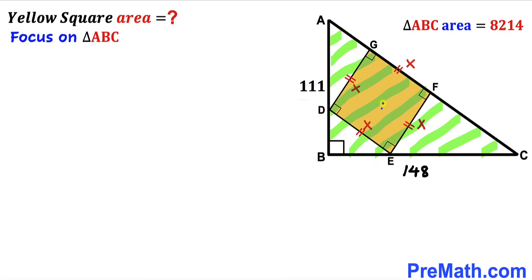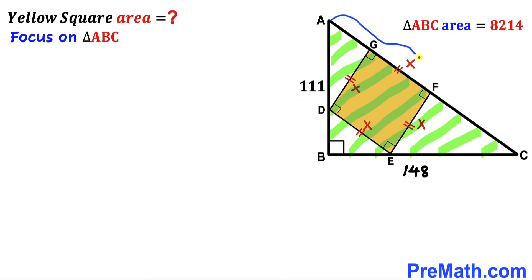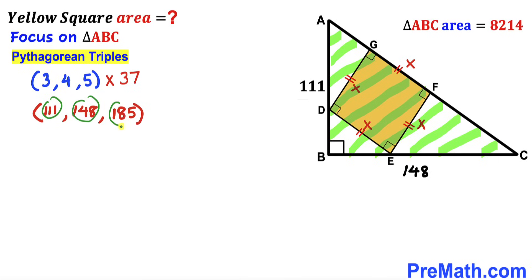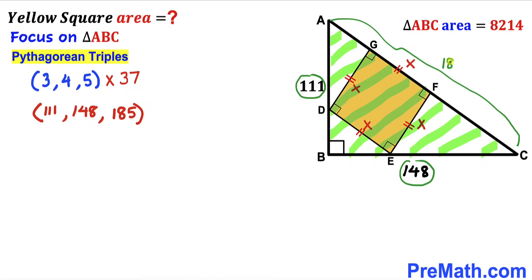Now focusing again on right triangle ABC — we know one leg is 111 and the other leg is 148 — our task is to find the hypotenuse. Recalling the Pythagorean triplet 3, 4, 5 and multiplying each number by 37 gives us a new triplet: 111, 148, and 185. Since our legs are 111 and 148, the hypotenuse AC is 185 units.